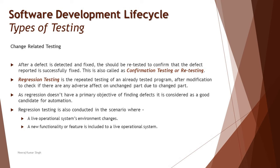Many people think regression testing should only be performed when a defect is fixed, but changes can happen during updates, upgrades, or migrations — where the platform changes and an application moves from one platform to another. It could be a system configuration change or an operating system change. So in a simple definition, regression testing is not limited to defects — it's about any change. Since a defect fix also invites a change, we perform regression then too.